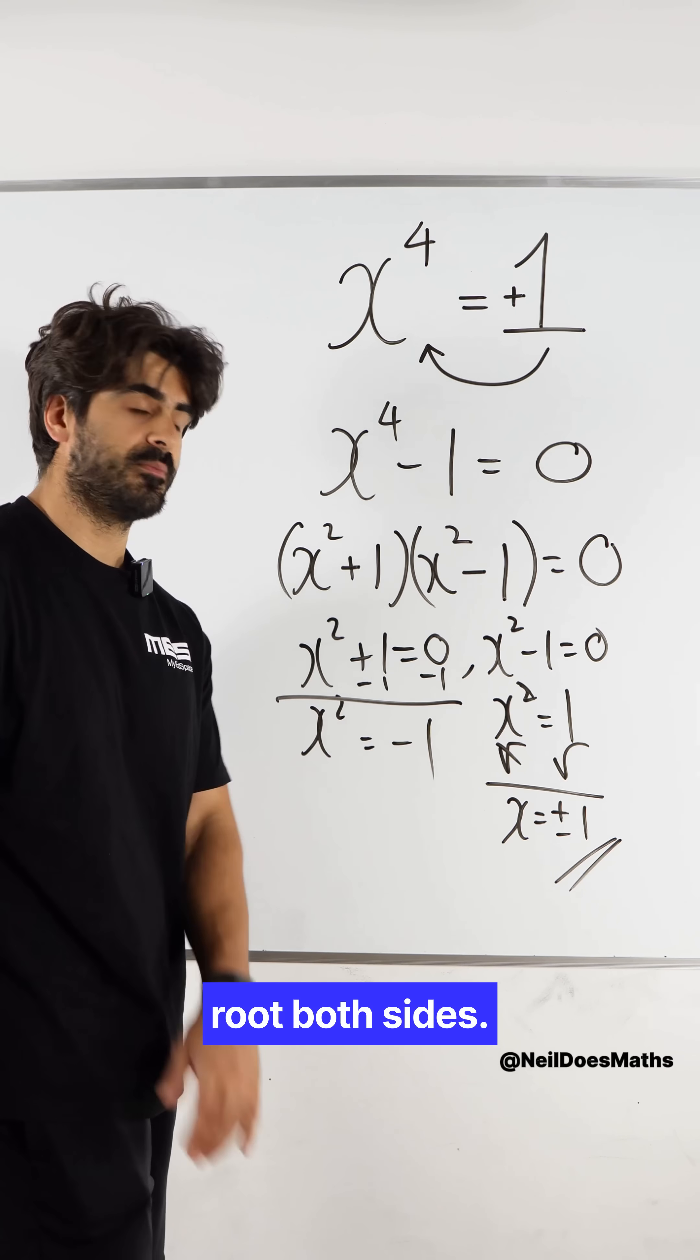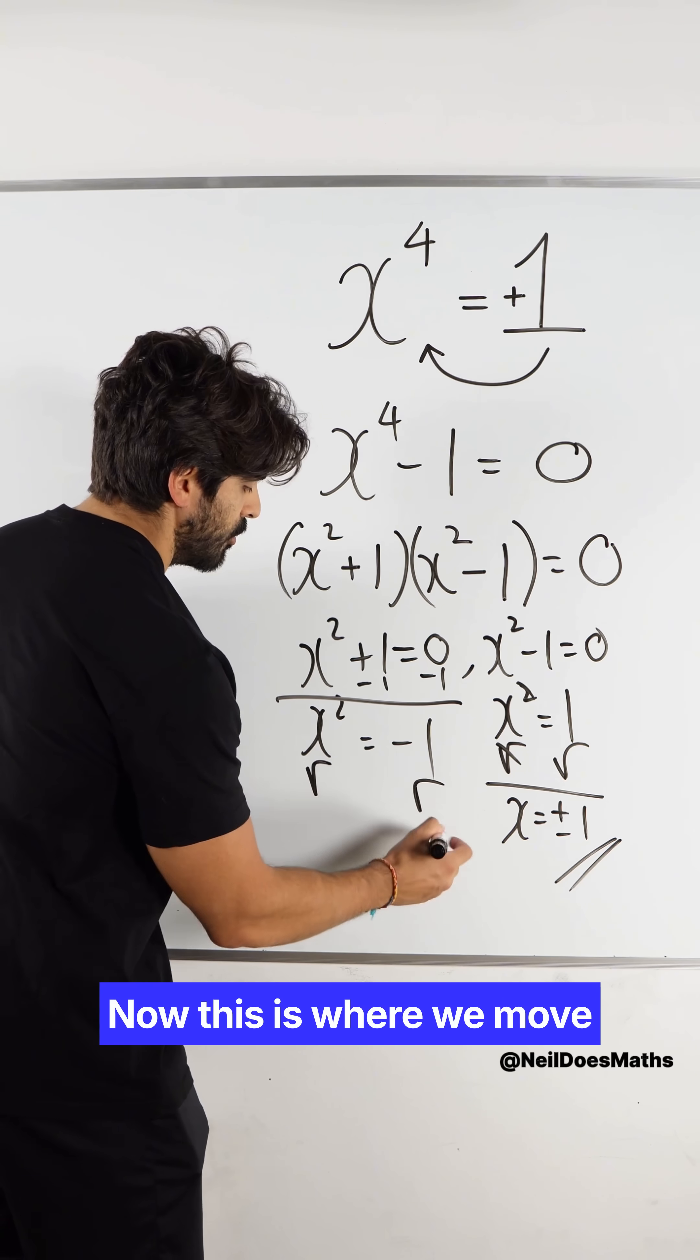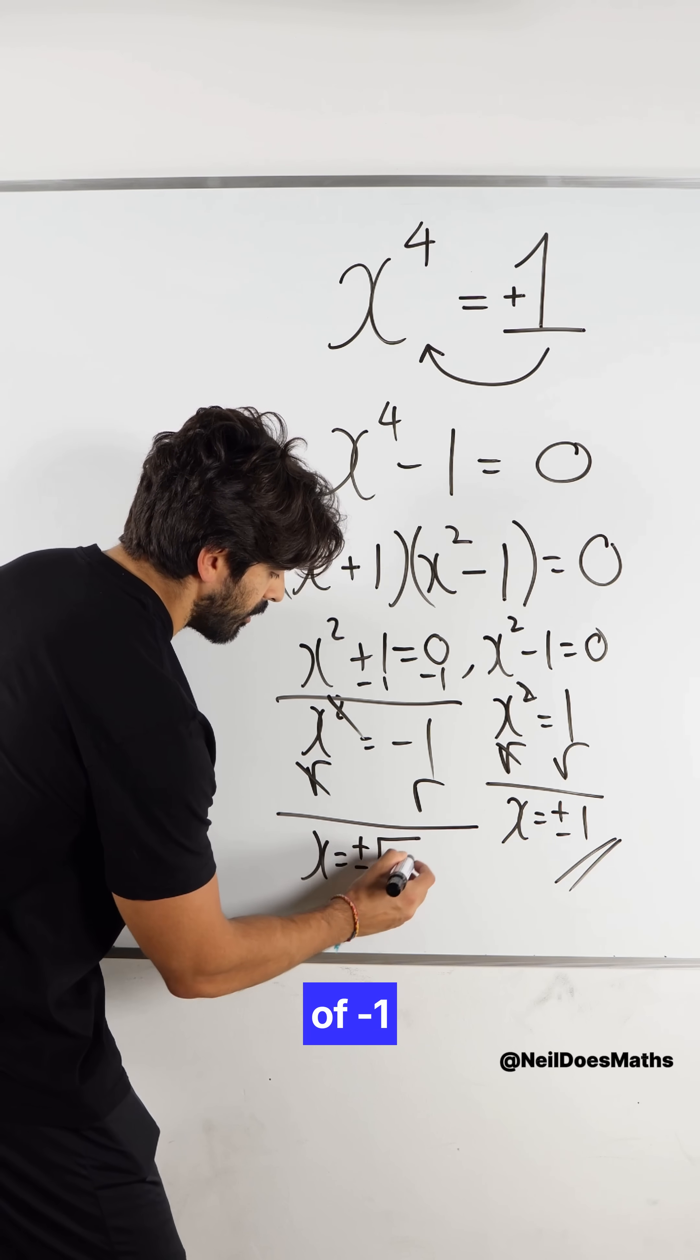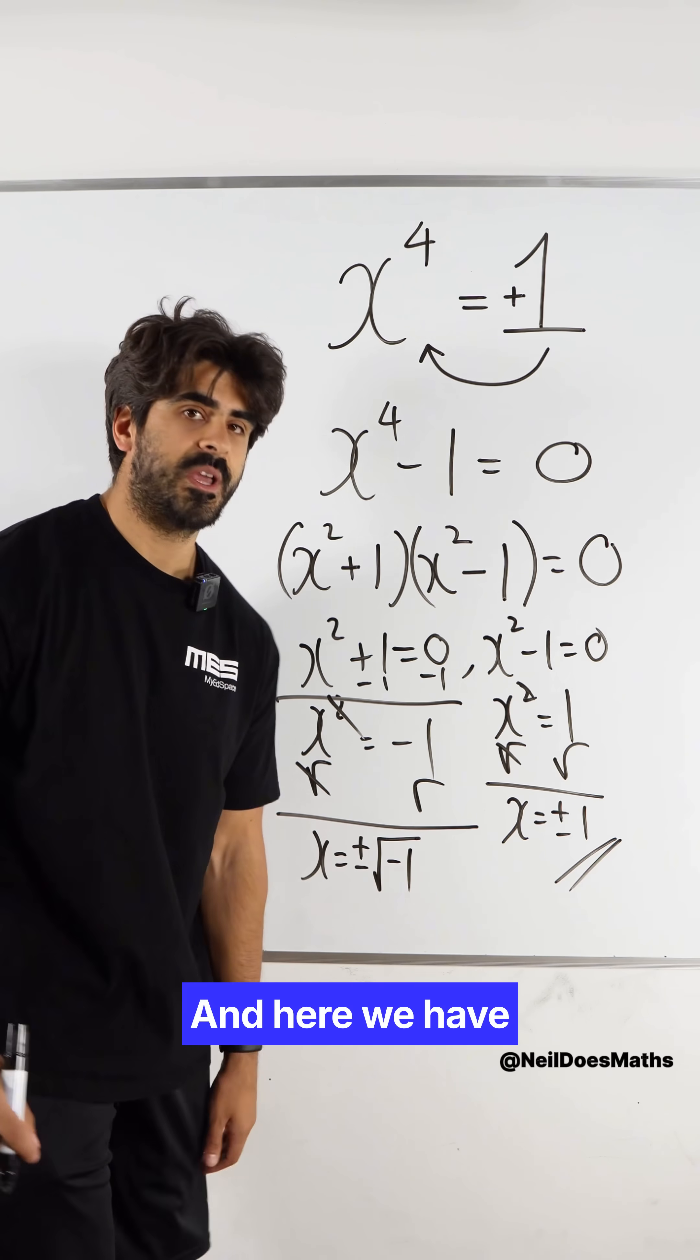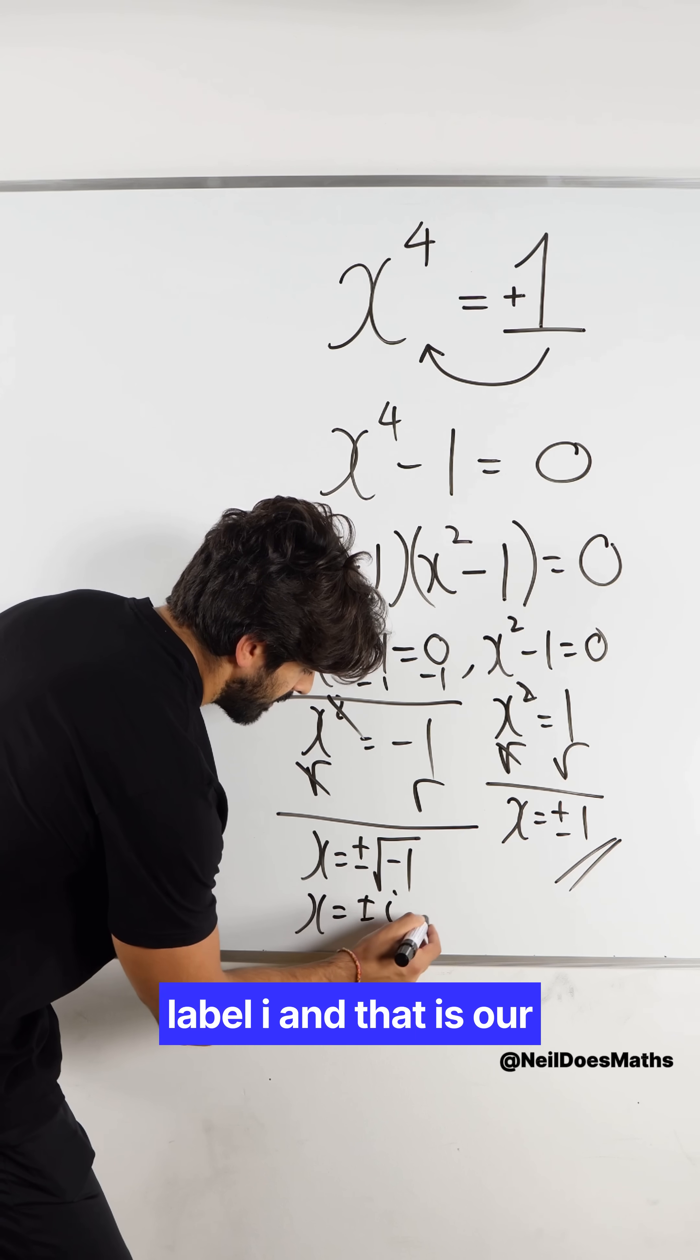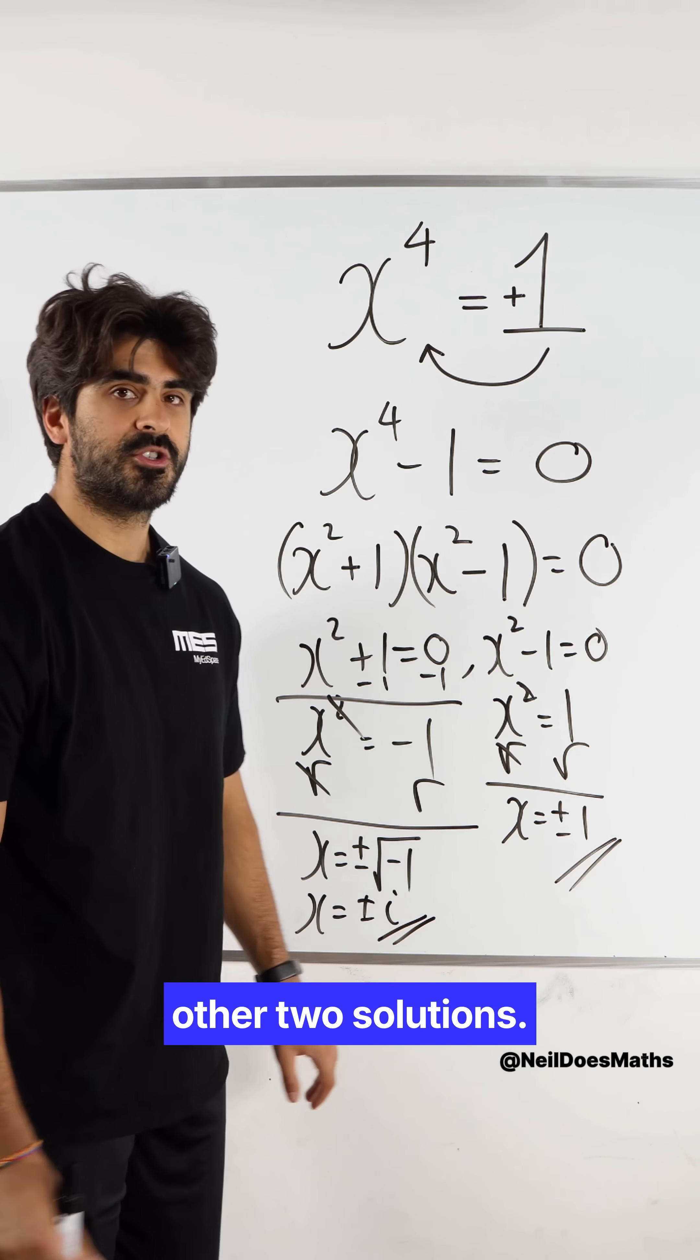And now I need to square root both sides. Now this is where we move into the complex domain. And we're left with plus minus the root of minus one. And here we have a constant which we label i. And that is our other two solutions.